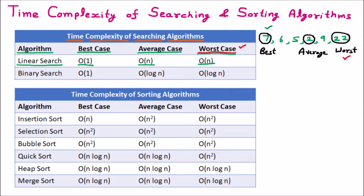For the worst case complexity of linear search, if 20 elements are given and we are doing 20 comparisons to find the last element, the worst case complexity is O(n). Similarly, for binary search, the best case complexity is the same as linear search — O(1) — meaning in a single go we can find the element if it is at the middle position. But if we talk about the average case and worst case of binary search, it is O(log n). Now we should understand that log n is obviously less than n.